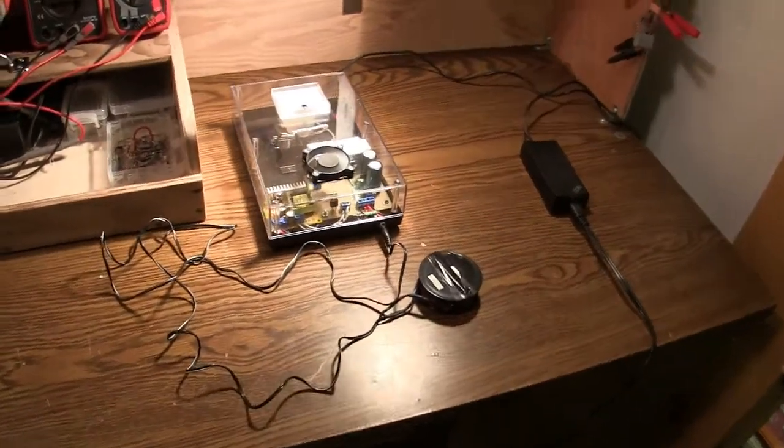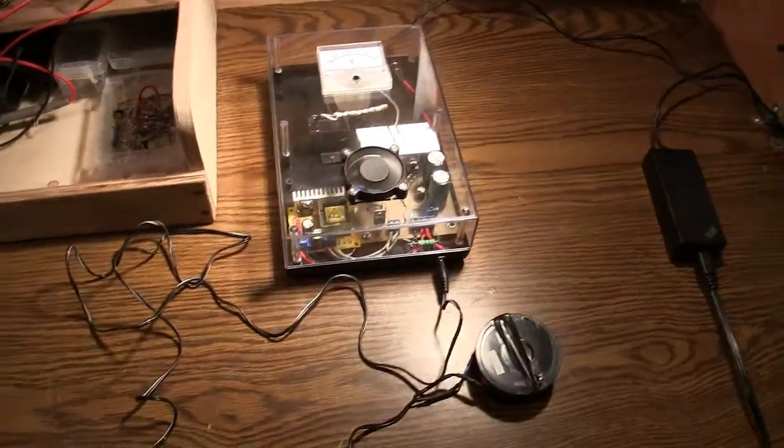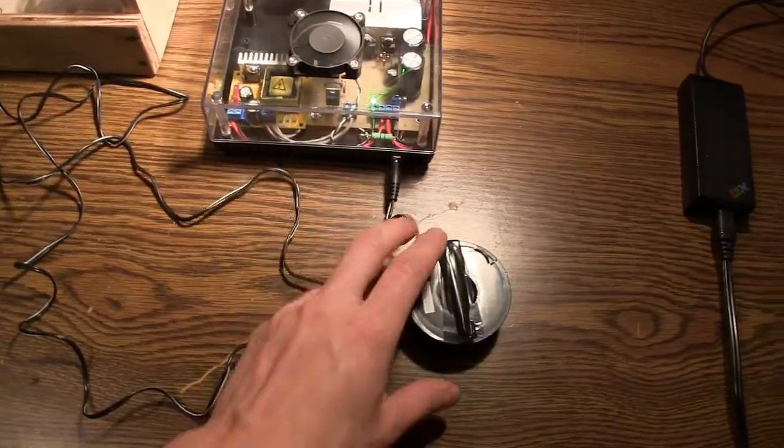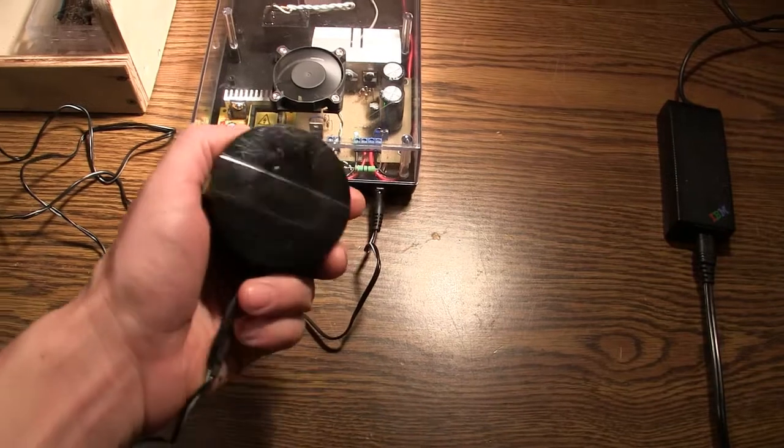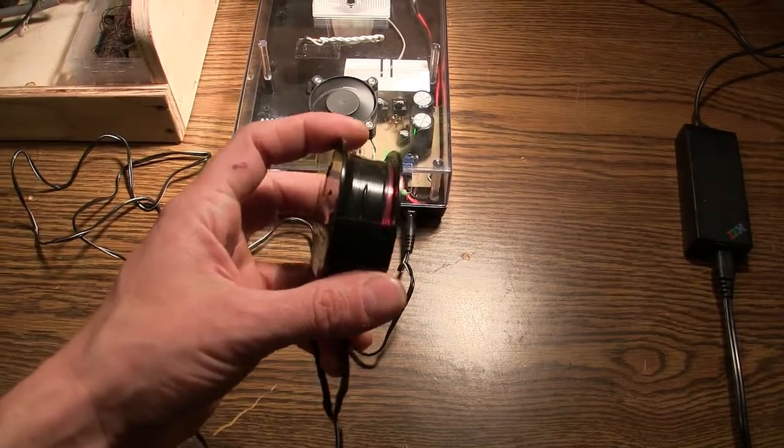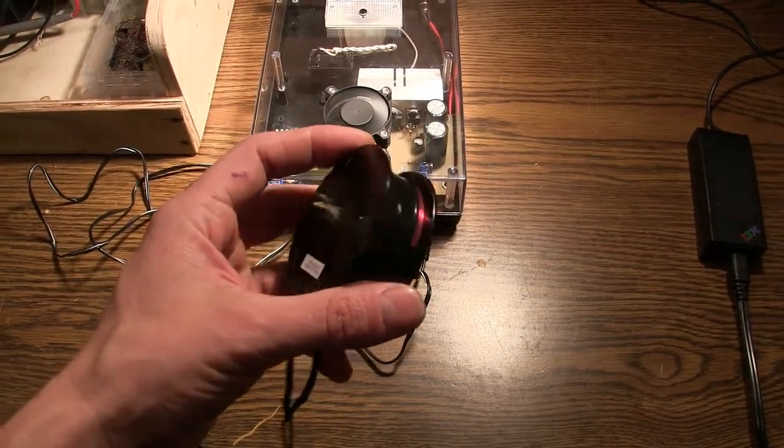So it shoots a washer really hard, and that's because the capacitors discharge into this coil with 350 volts. So this coil is emitting a very strong magnetic field, a very rapid magnetic field.